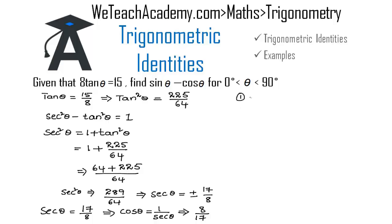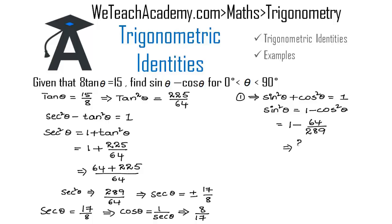Using the first identity, sine square theta plus cos square theta equals 1, we transfer cos square theta to the right hand side to get sine square theta equals 1 minus cos square theta. Substituting the value of cos theta, we get 1 minus 8 by 17 squared, which is 64 by 289. Simplifying gives 289 minus 64 divided by 289, so we get 225 divided by 289 as the value of sine square theta. Therefore sine theta equals the square root of 225 over the square root of 289, which is 15 by 17. Since theta lies between 0 and 90 degrees, sine theta is positive.